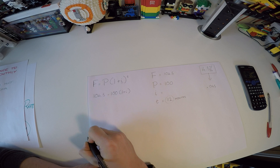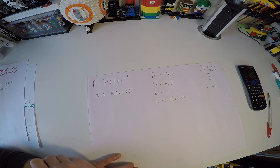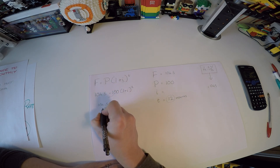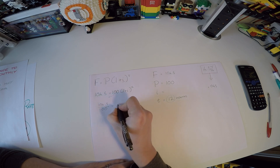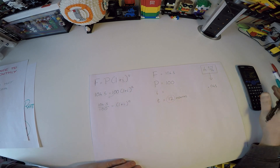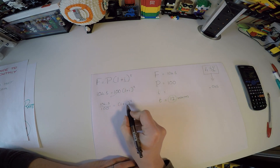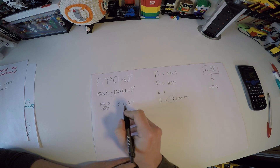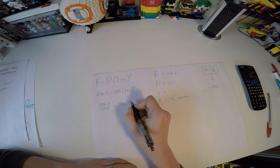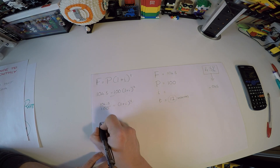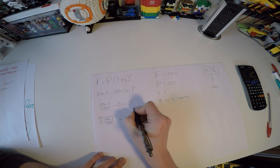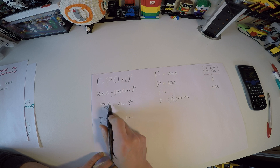I'll do this step by step. First, move the 100 across: 104.5 over 100 equals (1 + i) to the power of 12. Next, I need to isolate i, so I need to get rid of the power of 12. Just like you'd take the square root to undo squaring, here I take the 12th root of the left-hand side. So the 12th root of (104.5 over 100) equals (1 + i).